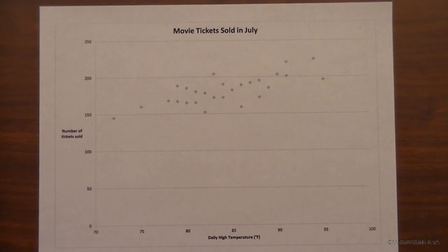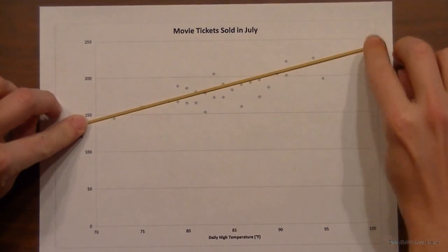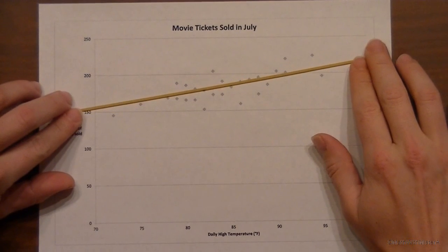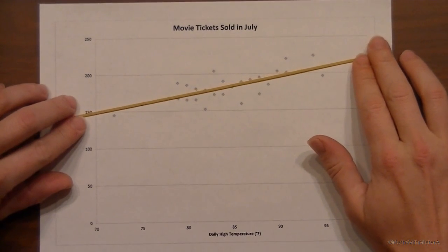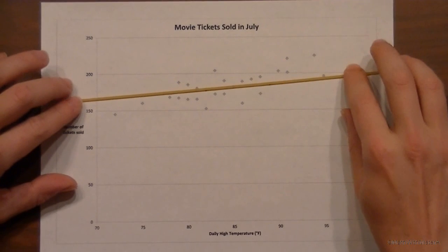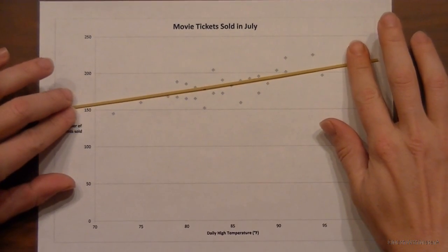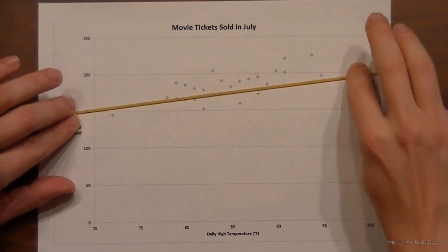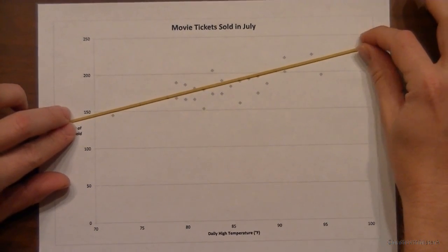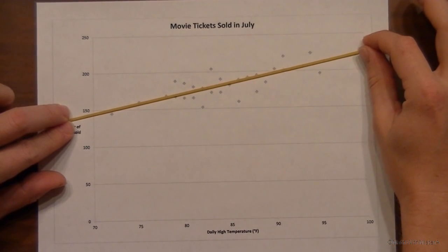I'm going to take a piece of raw spaghetti for my straight line and just move it around, adjust it a little bit, and figure out what kind of straight line would be the best overall average summary of what all these different points are doing. I don't really need to cross as many points as possible — just try to get right in the middle of what's going on, with a few points above and a few points below. This is going to be the linear model.